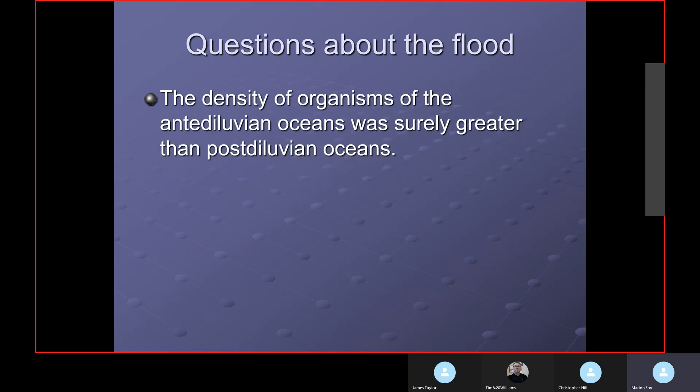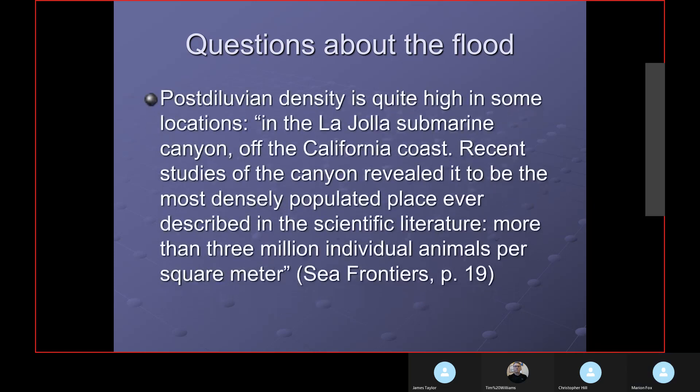The density of organisms in the antediluvian ocean was surely greater than in post-diluvian oceans. Even post-diluvian density is quite high in some locations. In the La Jolla Submarine Canyon off the California coast, recent studies revealed it to be the most densely populated place ever described in the scientific literature — more than three million individual animals per square meter. If you project that density, perhaps even greatly increased, all over the world under antediluvian conditions, we'd see a very large number of fossils. Their assumptions are uniformitarian and therefore false.